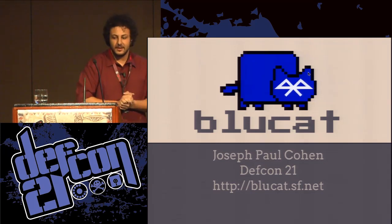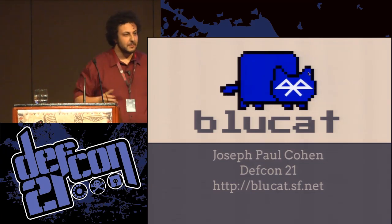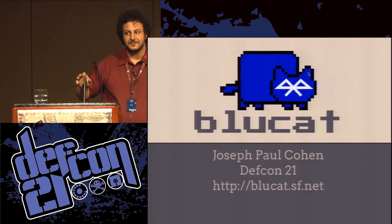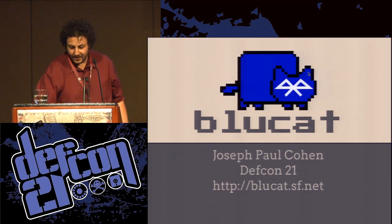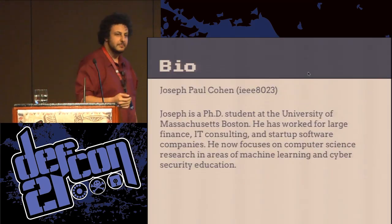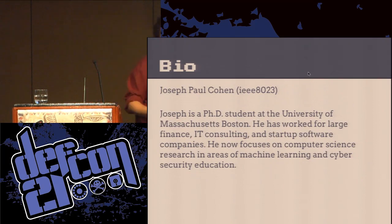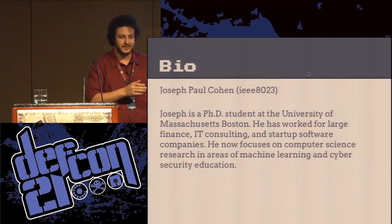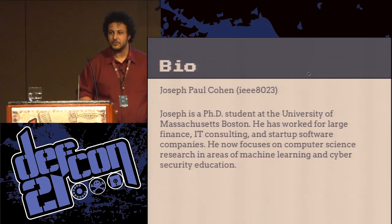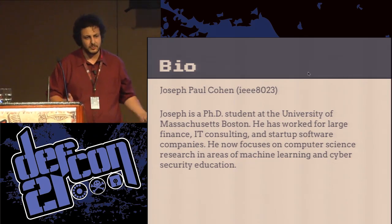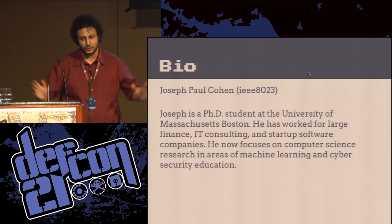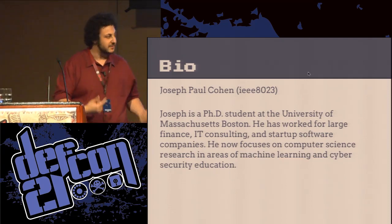I'm here to talk about BlueCat. My name is Joseph Paul Cohen. I'm a Ph.D. student at UMass Boston. This is kind of a side thing based on cybersecurity and computer science education. I do a lot of machine learning and computer vision stuff — it's kind of dual tracks. So this is the fun stuff.